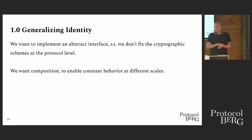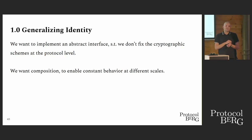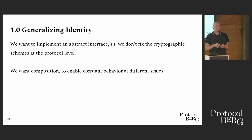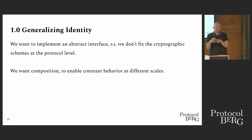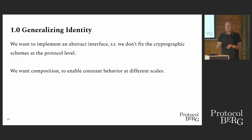We also want composition to enable constant behavior at different scales. So basically, if I have one identity and I want another identity, I want these identities to be able to smoosh together so I get one identity that contains them both with some well-defined logic.